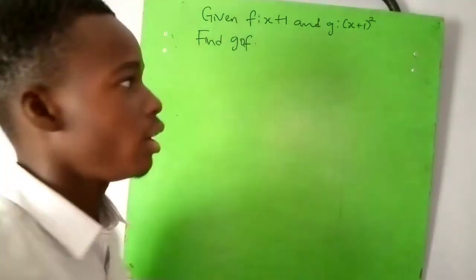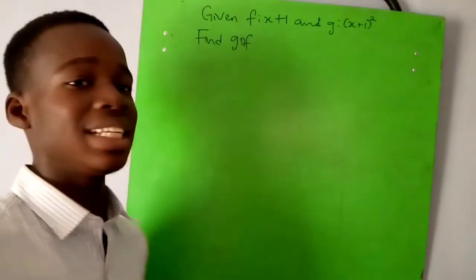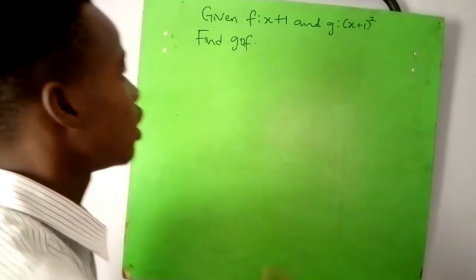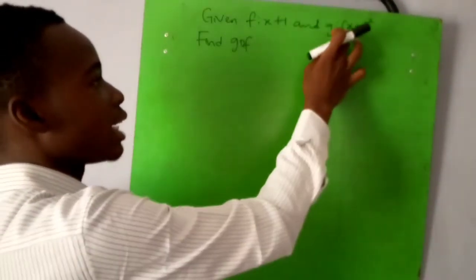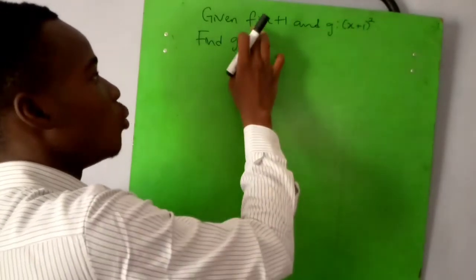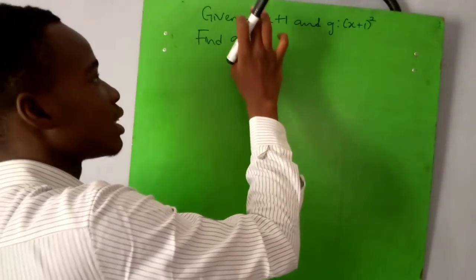Now what this means in layman's language is that we want a g version of f. So anywhere we see x in g, we are going to substitute it with the function f, which is x+1.